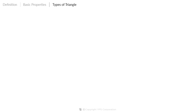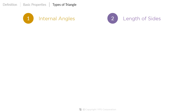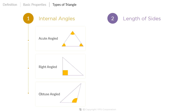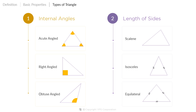Moving on, let's discuss the types of triangle. Triangles are classified based on the internal angles and the length of their sides. Based on angle measurement, triangles are classified into three types: acute, right, and obtuse angle triangles. Based on the length of their sides, triangles are classified into three types: scalene, isosceles, and equilateral triangle. Let us discuss each type in detail.